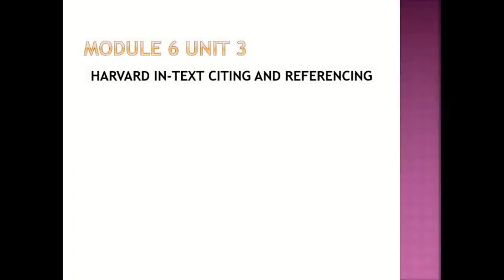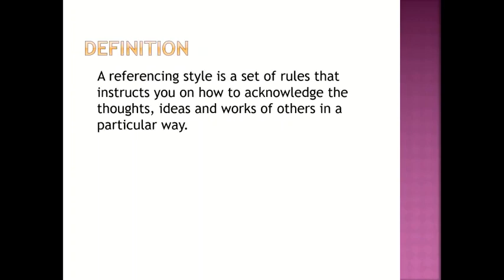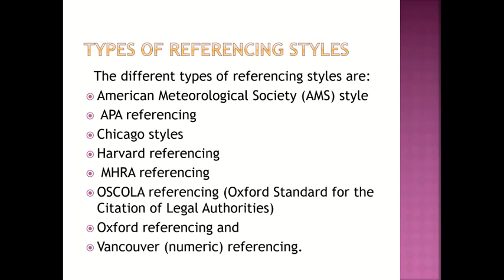In the last unit we saw what plagiarism means and its implications. As researchers, we have to know ways of avoiding plagiarism, and that is by proper referencing. That's the reason why we are covering Harvard in-text citing and referencing. A referencing style is a set of rules that instructs you on how to acknowledge the thoughts, ideas, and works of others in a particular way. There are different types of referencing styles, and the choice depends on you, your institution, and your field.